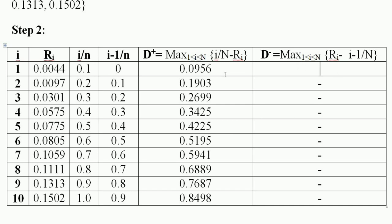D− is calculated as ri minus (i−1)/n. For the first value: 0.0044 − 0 = 0.0044. The next value is 0.0097 − 0.1, which gives a negative value.